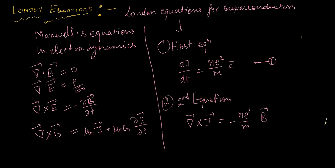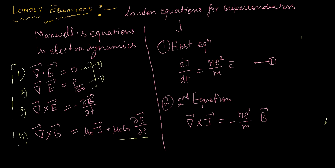The four Maxwell equations in electrodynamics in differential form are: number one, divergence of B equals zero; number two, divergence of E equals rho upon epsilon naught; number three is Faraday's law: del cross E equals minus del B upon del T; and number four is Ampere's law with the modification of displacement current: del cross B equals mu naught times J plus mu naught epsilon naught del E upon del T.